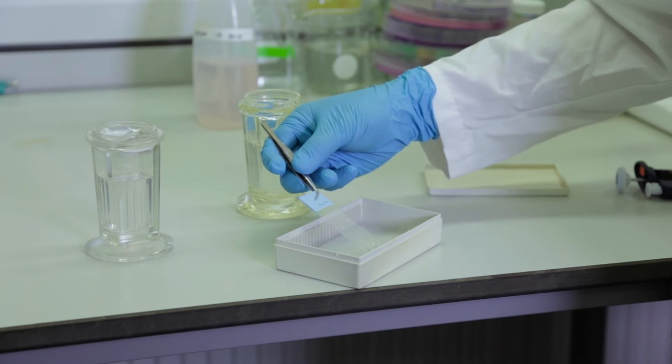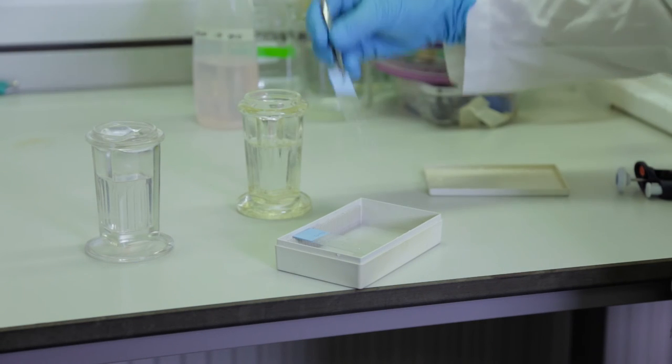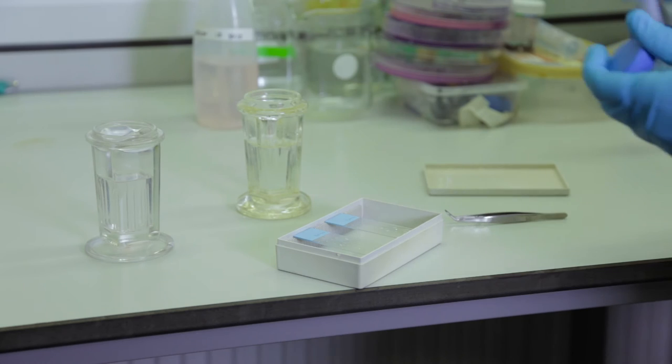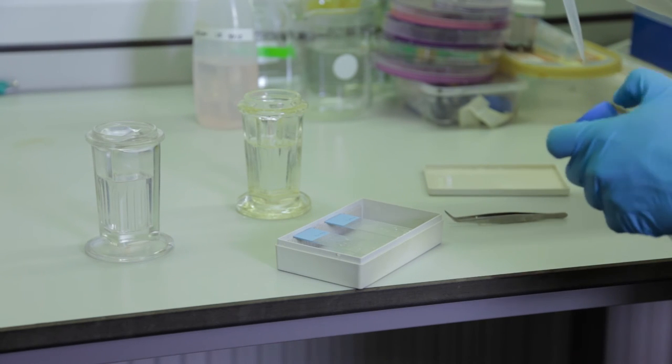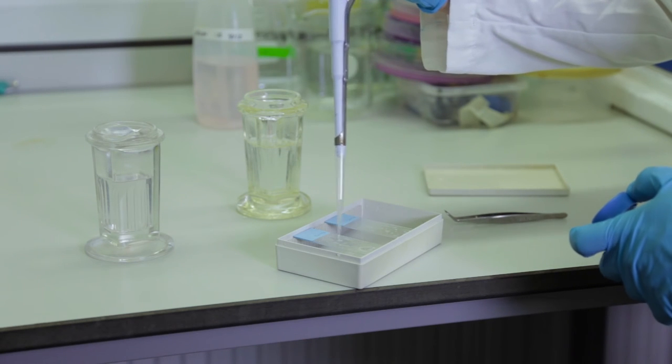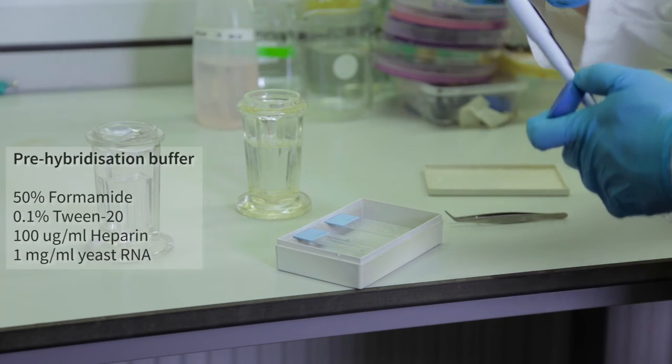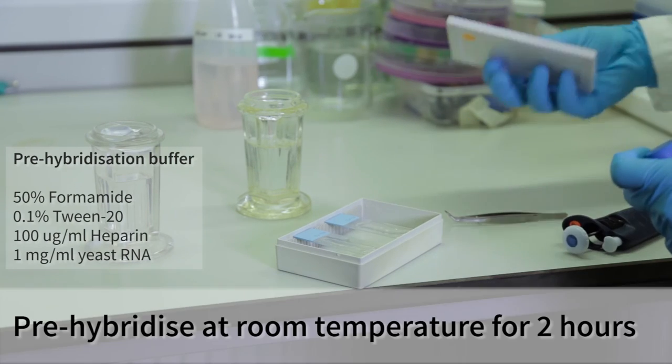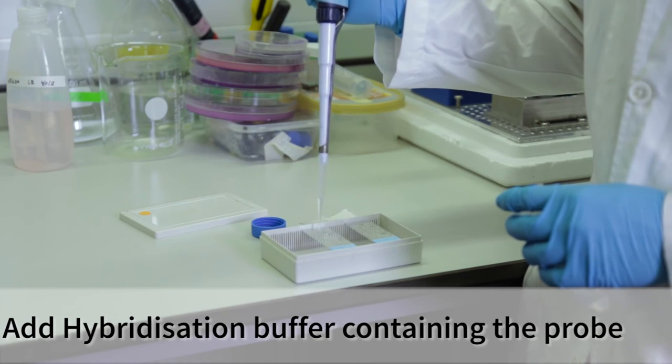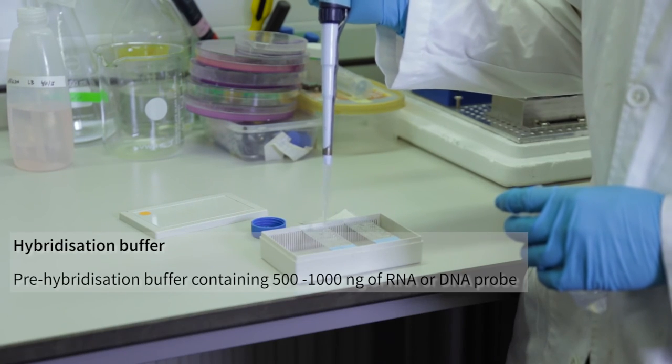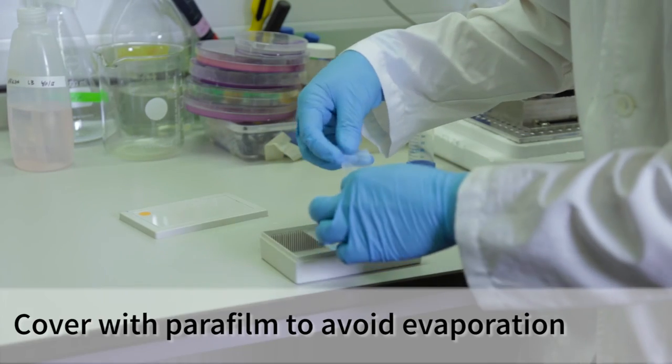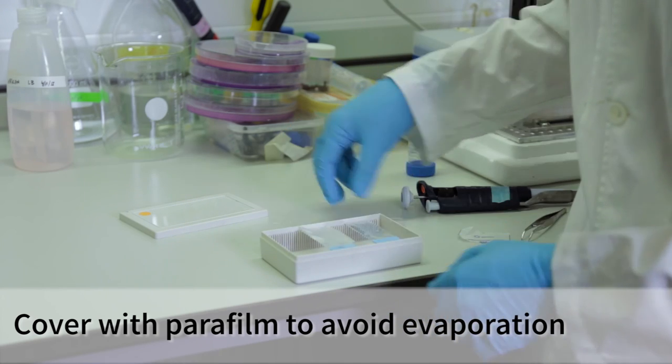We will remove paraformaldehyde by washes. I need to block the slides from non-specific binding of RNA. Pre-hybridization buffer has many different components to keep the RNA denatured, so that it's linear and can bind to the probe effectively. It also has other components that minimize non-specific binding. For this, we will use pre-hybridization buffer which contains yeast RNA. We add the hybridization buffer containing 500 to 1000 nanograms of our probe. Then, we will cover it with parafilm. This is to avoid evaporation of the probe.